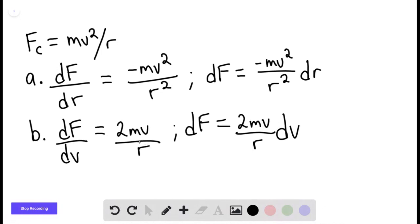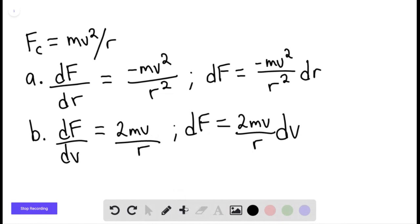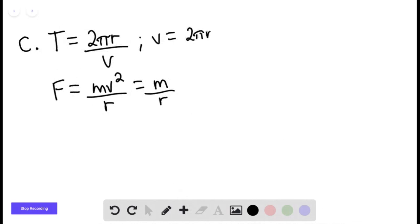Given this for part c, we can say that the period of a circular ride is simply equal to the circumference 2pi r divided by the velocity at which it rotates. So f will be equal to mv squared over r. This would be equal to m over r. Solving for v, this is going to be equal to 2pi r over the period.